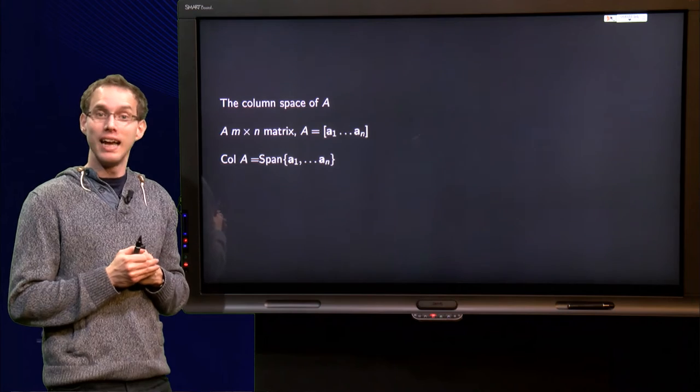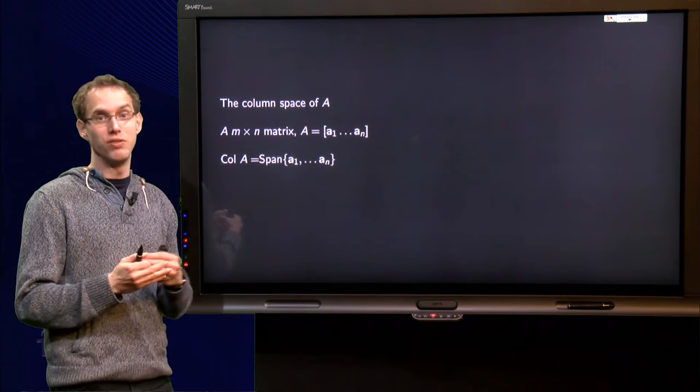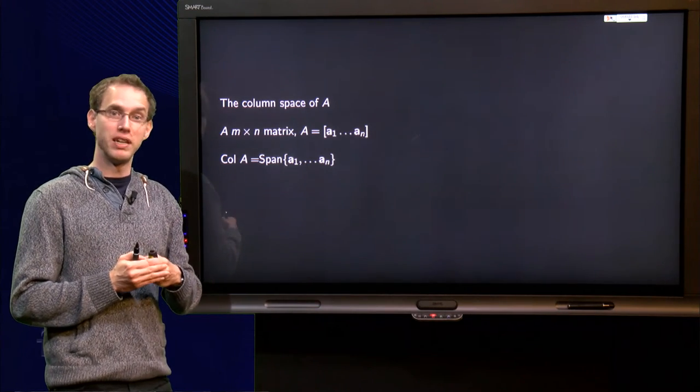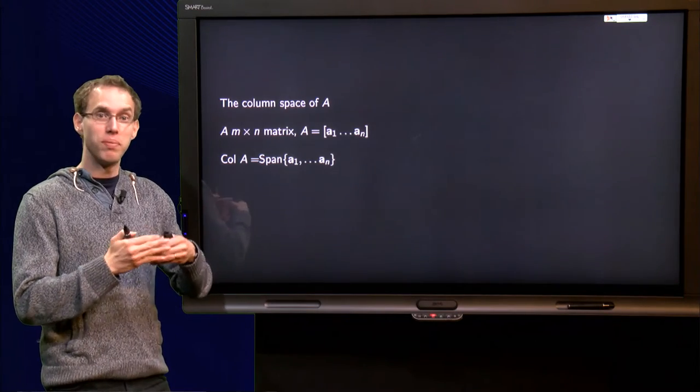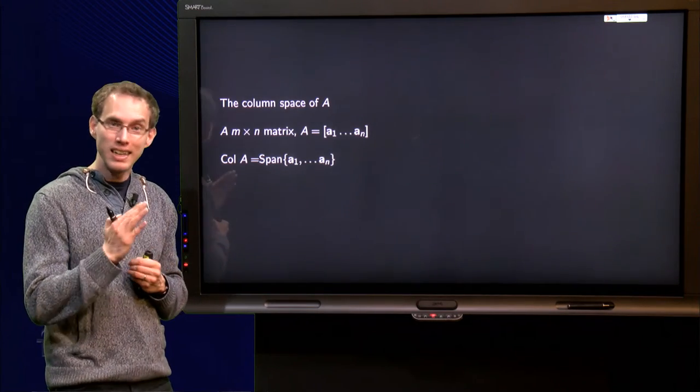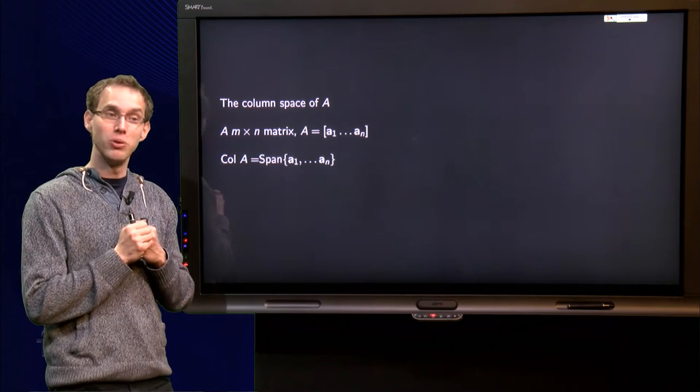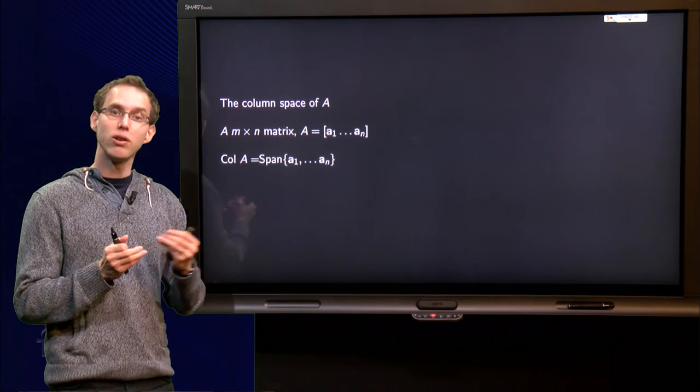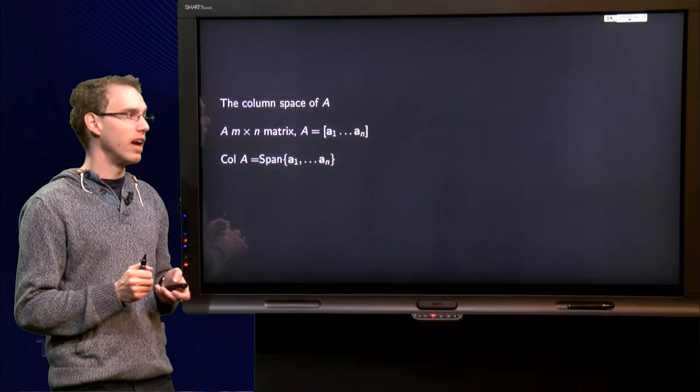Then we define column space as follows. Any span is a subspace, so an obvious way to define subspace related to a matrix is just to take the span of its columns. And that is exactly what we are going to do for the column space. The column space of A is the span of the columns of A.